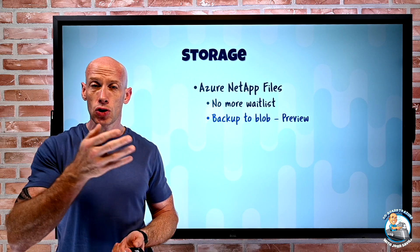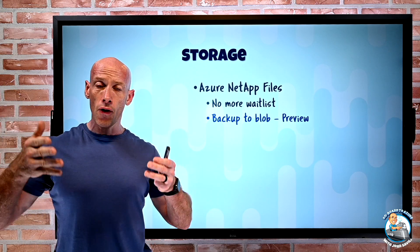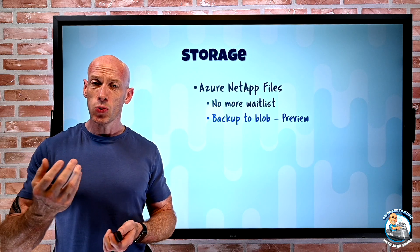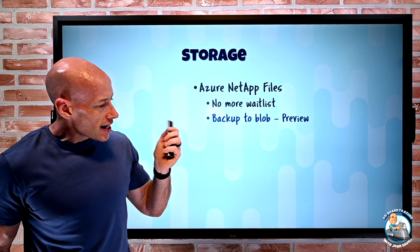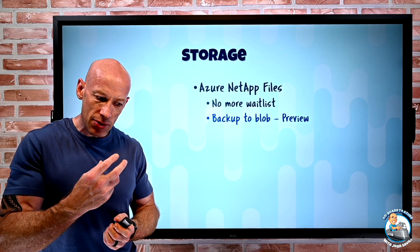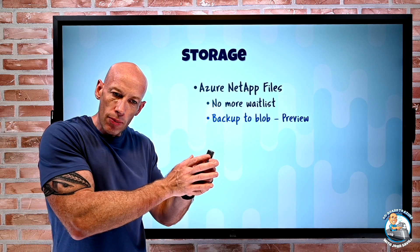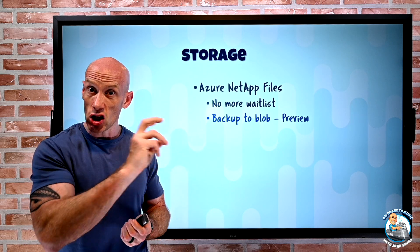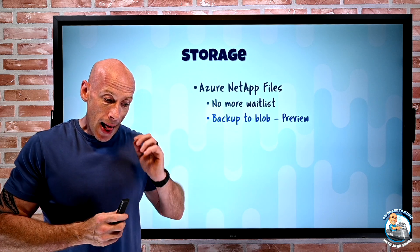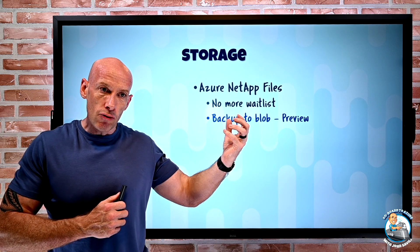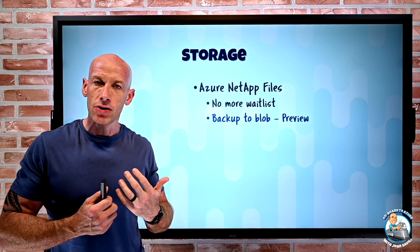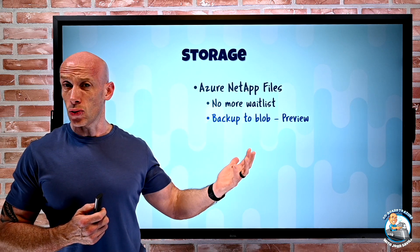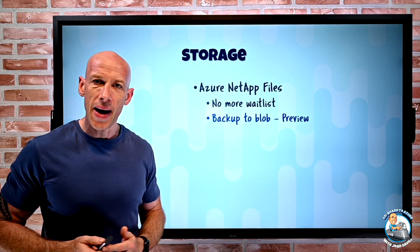NetApp ONTAP has native snapshot capability, storing snapshots on the ONTAP filers. But Azure NetApp Files has a certain cost, whereas regular blob storage is cheaper. This new capability lets you take those snapshots and move them to blob storage. It's delta-based, so only the changes go to blob. Even though it's a delta offload, you can restore it as a single action back to a new NetApp volume. You can do this manually or schedule it.